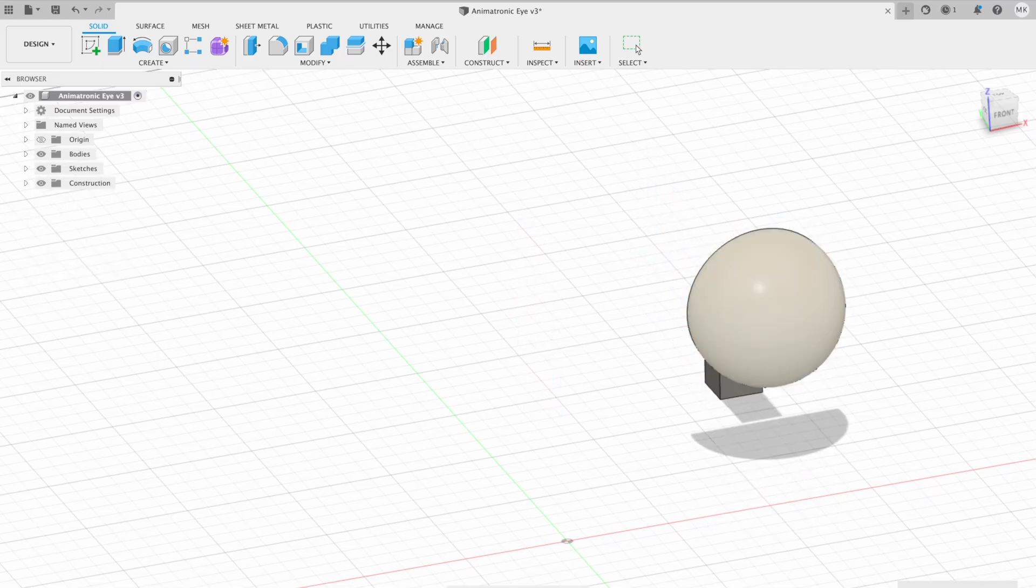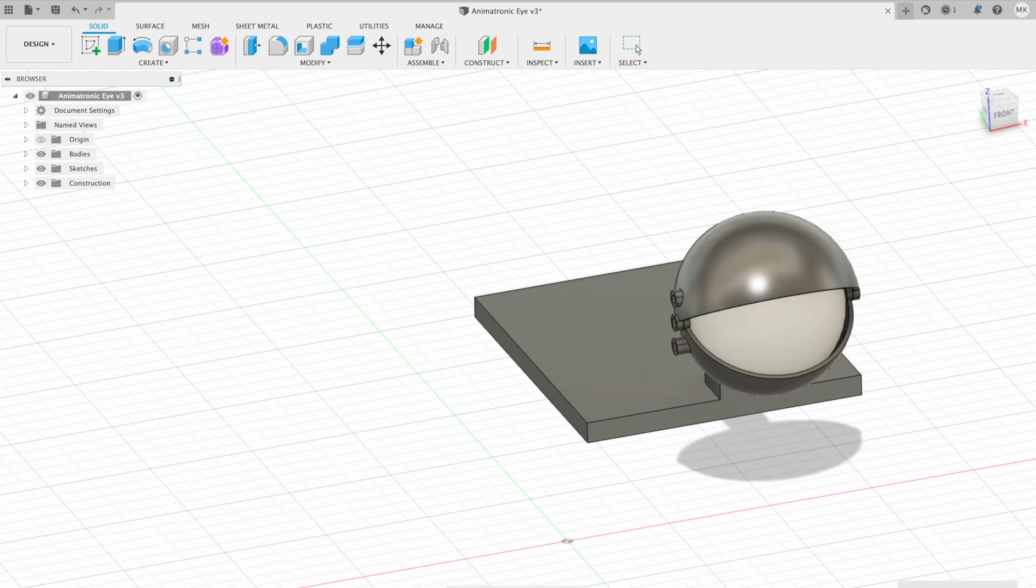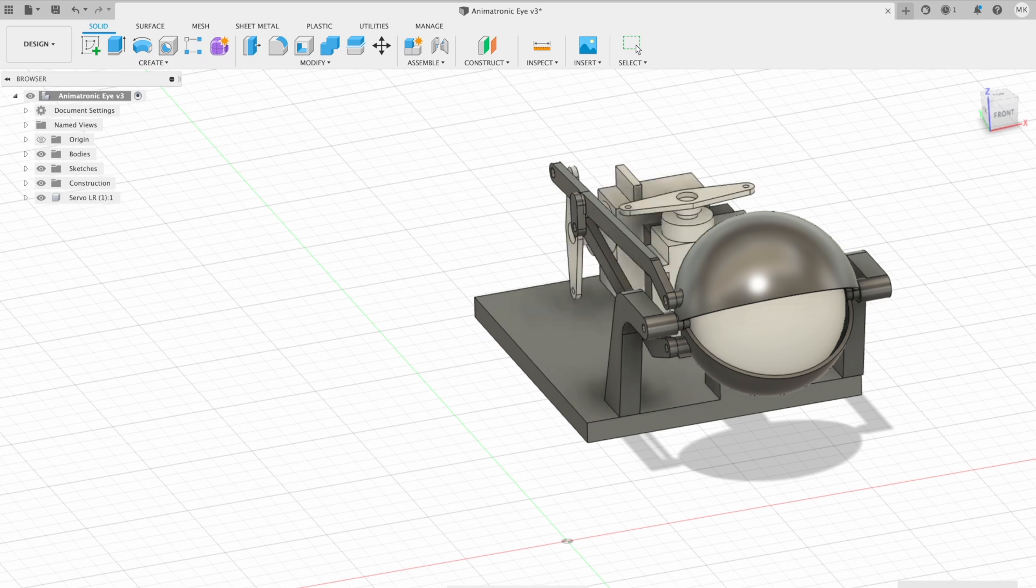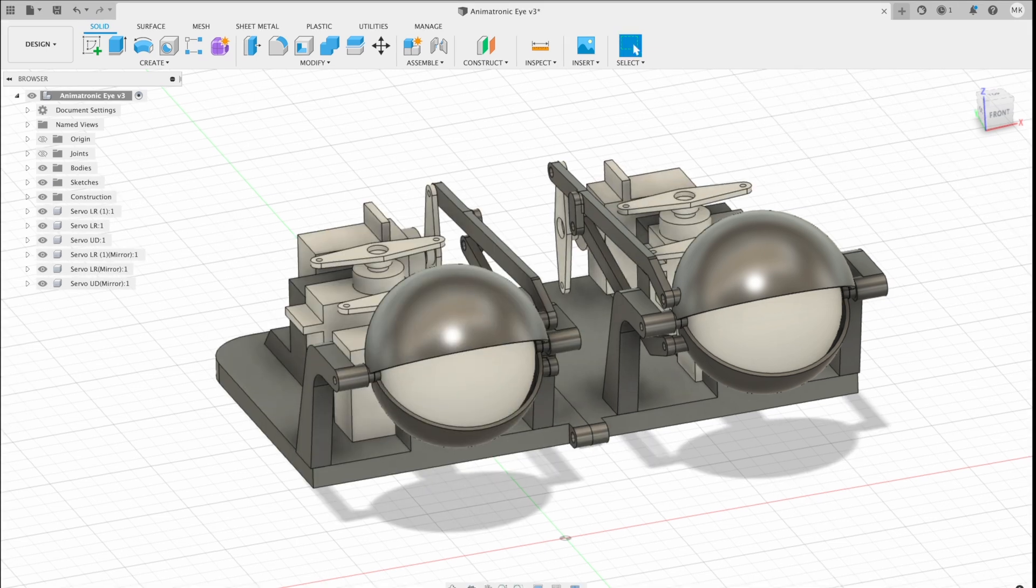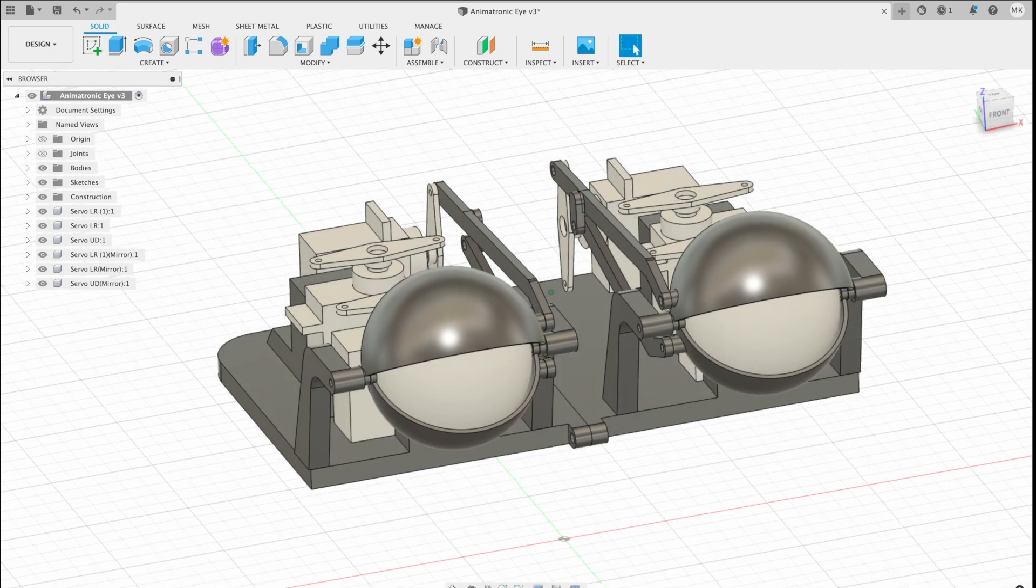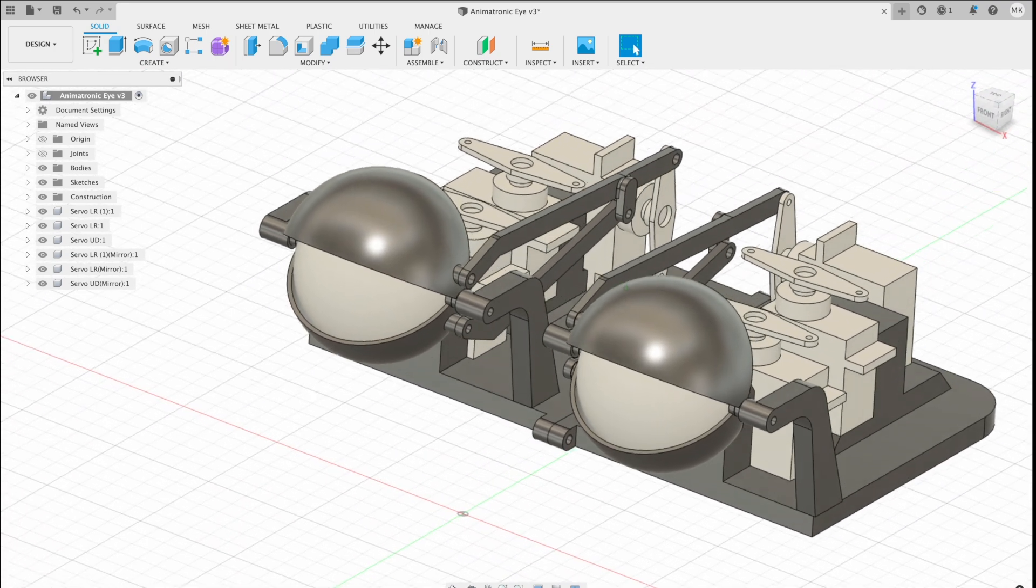I started out by drawing up a 3D model in Fusion 360. I knew roughly what I wanted the final set of eyes to look like, but naturally I had to make a few tweaks along the way. I wanted the eyes to be able to move left and right as well as up and down, so I needed two servos for each of them.